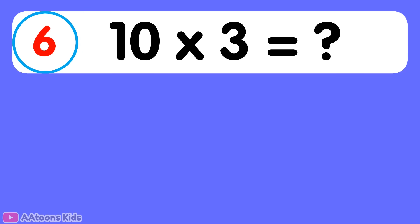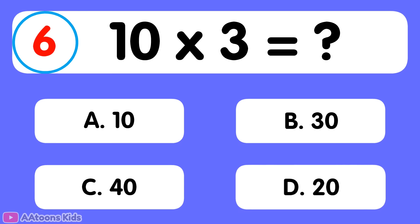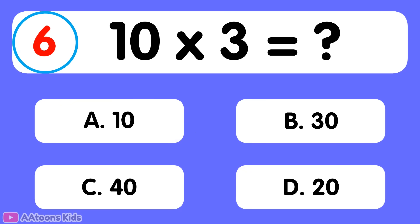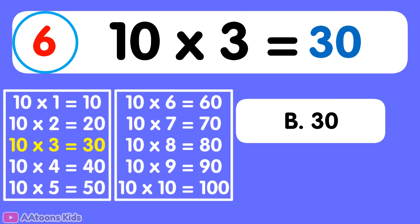10 times 3 is equal to... 30. 10 times 3 is 30.